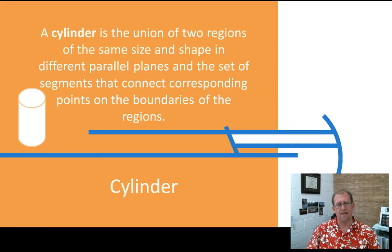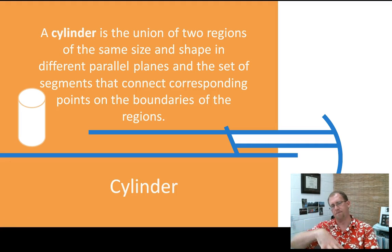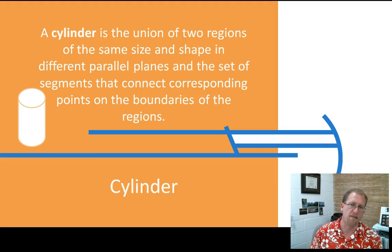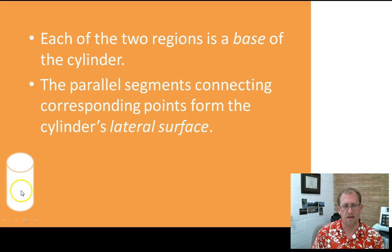Similarly, a cylinder is the union of two regions of the same size and shape in different parallel planes. So here I have a circle up here, and there's another circle down here on the bottom. There's this plane and then a parallel plane, and they both have a circle. And then I connect every point in this circle with every point in this circle, and I wind up having basically what looks like a tin can. This is a cylinder. Now, this is drawn with a circle as the base, but the base needn't be a circle. It can be squares, triangles, polygons of any kind. Each of the two regions we call a base, and the lateral surface is all of the connecting area that connects the two bases.